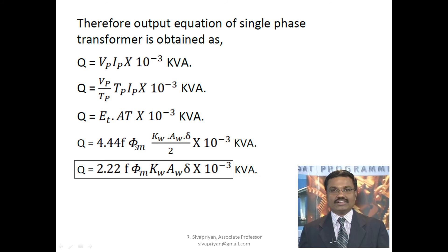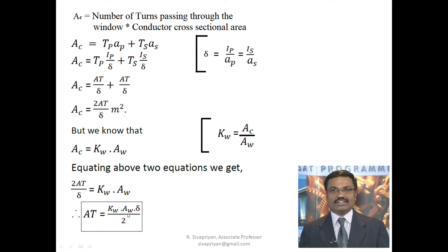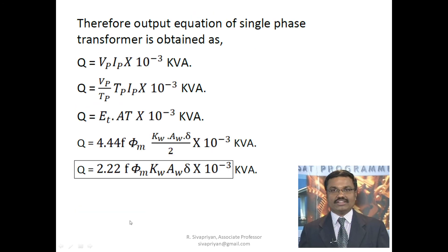The EMF per turn Et equals 4.44×f×φm, and AT equals (Kw×Aw×δ)/2. Substituting these values: Q = 4.44×f×φm × (Kw×Aw×δ)/2 × 10⁻³. The factor 4.44 divided by 2 gives 2.22, so the output equation becomes Q = 2.22×f×φm×Kw×Aw×δ×10⁻³ kVA.